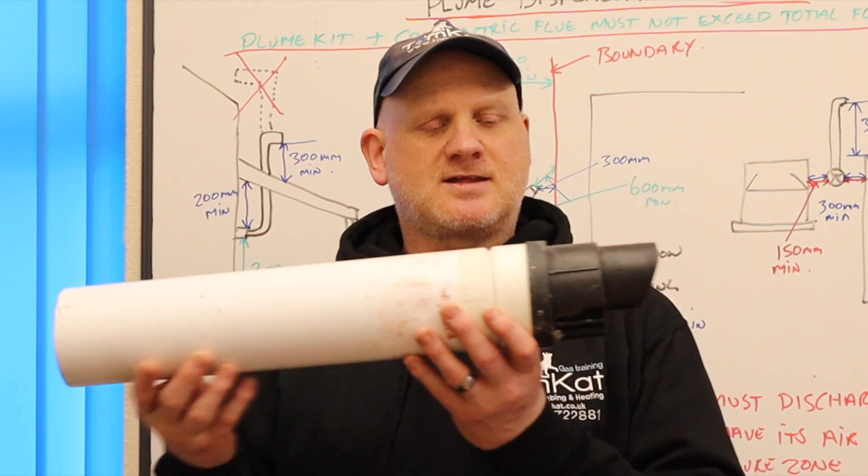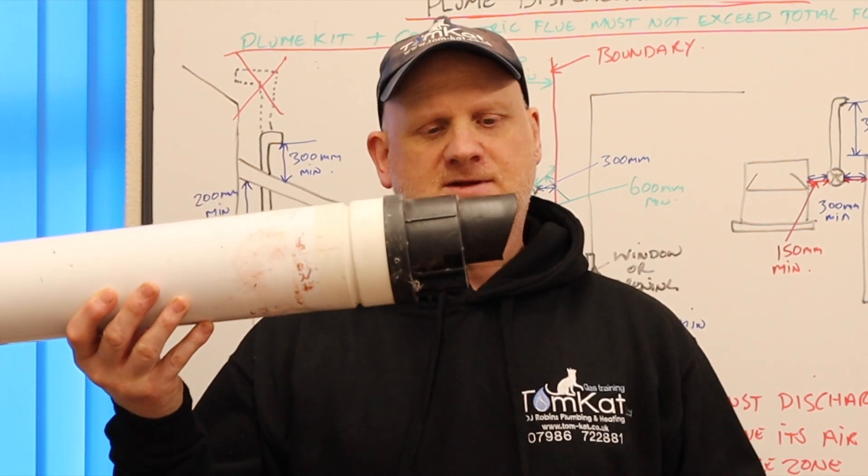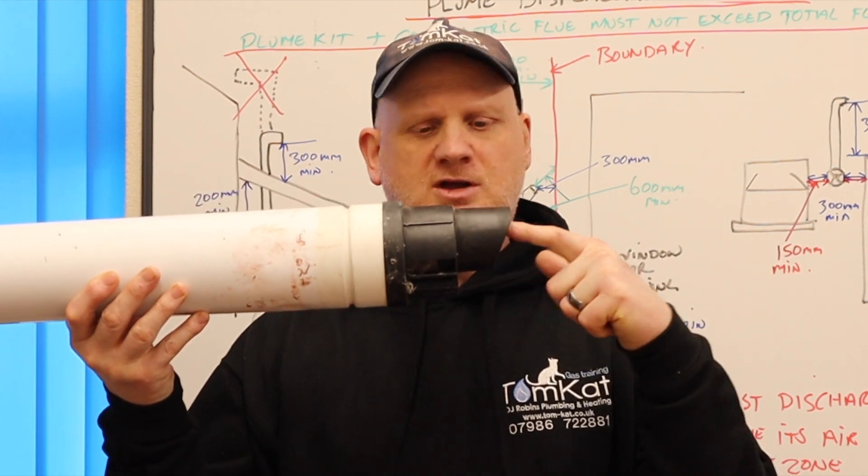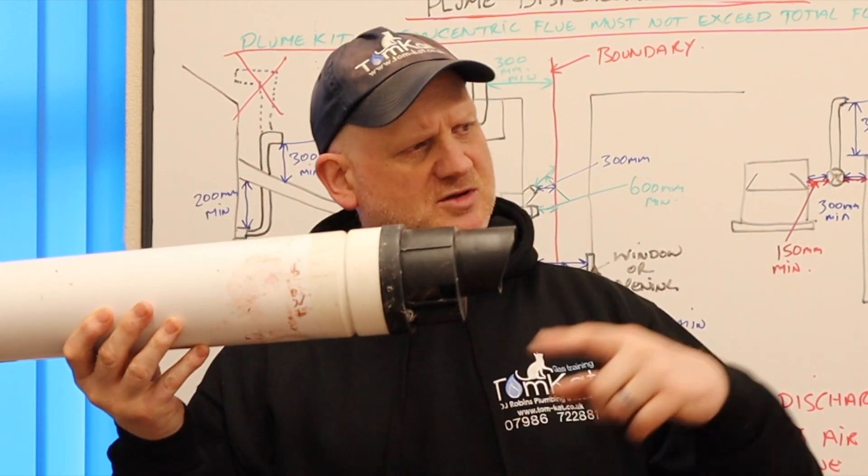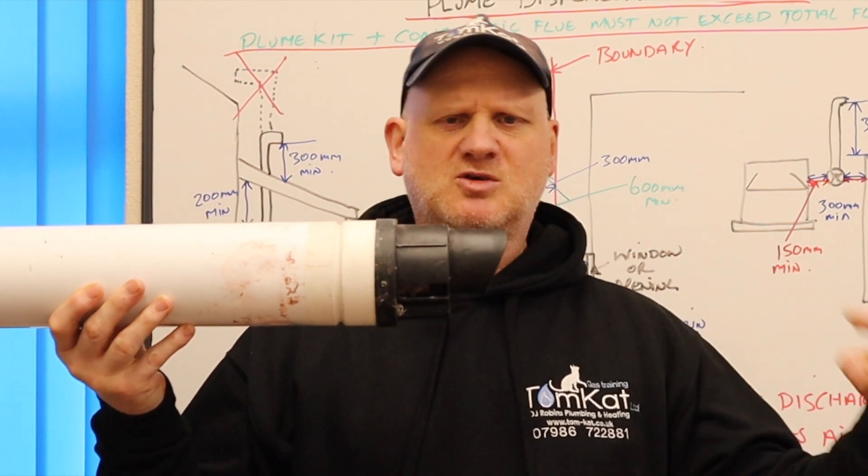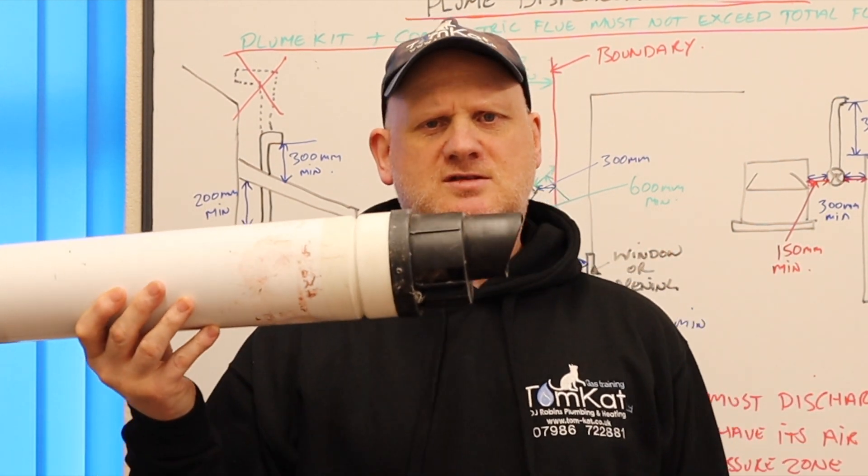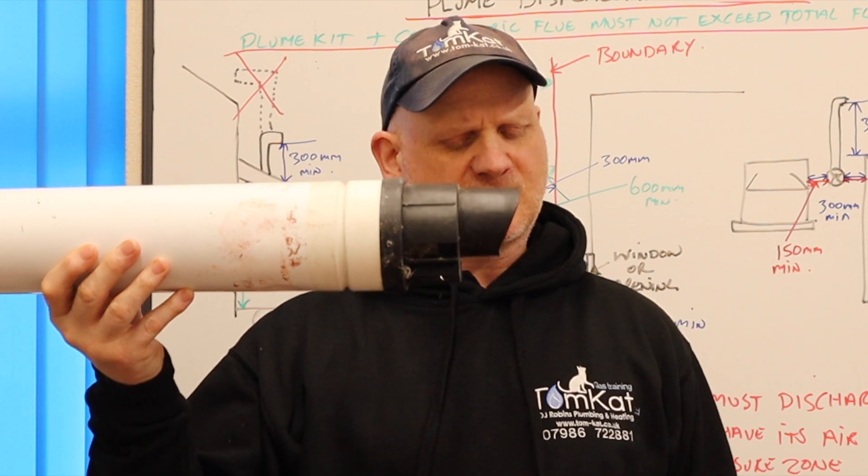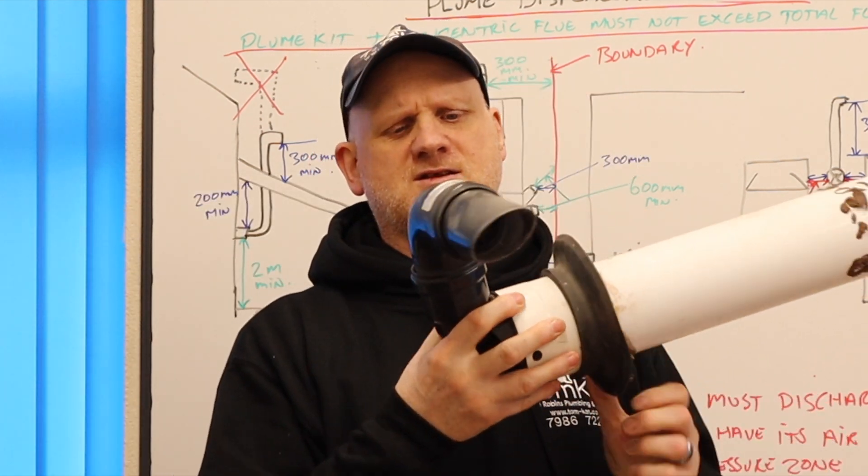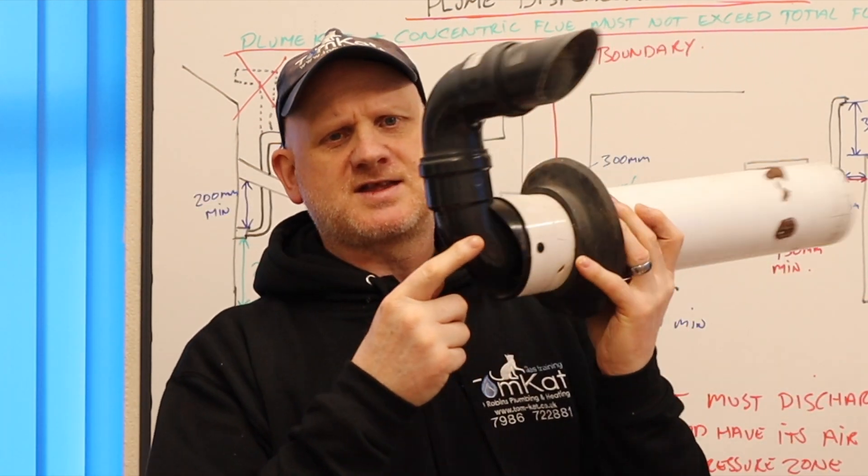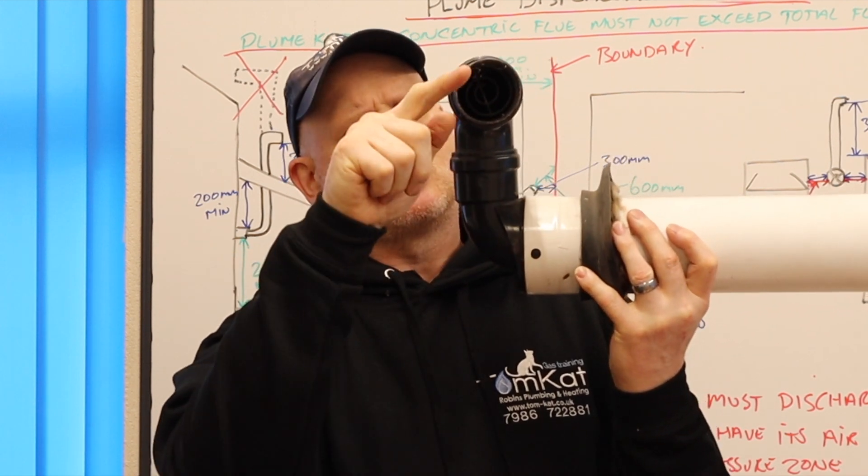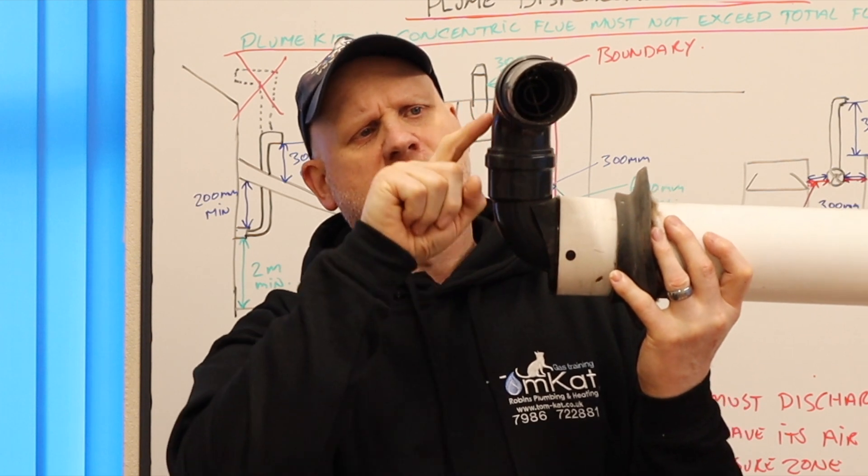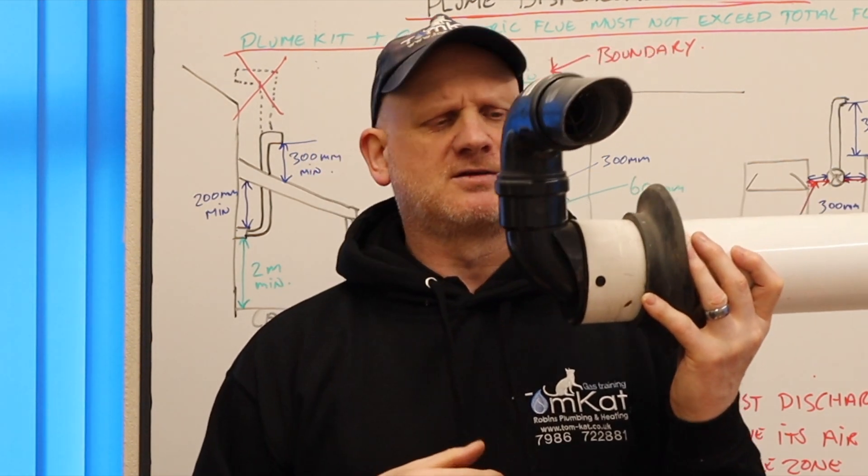This is a standard flue system and the products of combustion come out of this bit here. If you've got this too low or pointing at somebody's house, you could be creating a pluming nuisance. So instead of using that system, we could use this system where instead of it just coming straight out, we've got an elbow now and then another elbow on the top pointing to another direction.